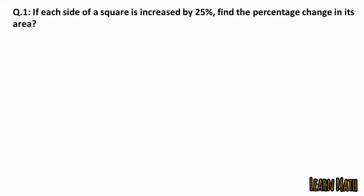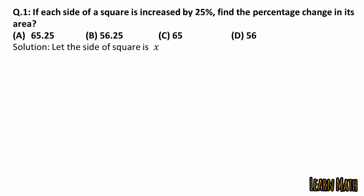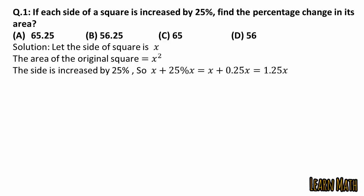The first question is: if each side of a square is increased by 25 percent, find the percentage change in its area. Let the side of the square be x, so the area of the square will be x squared. According to the question, each side is increased by 25 percent, so the new side will be x plus 25 percent of x, which we can write as x plus 0.25x.